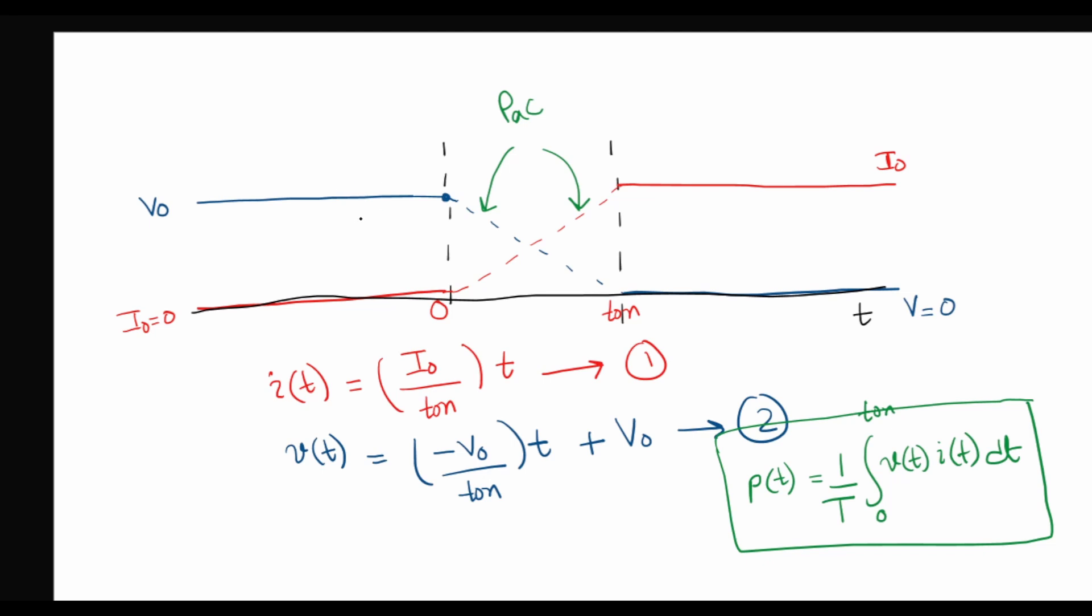We derived expressions for the instantaneous values of the current and voltage, and we saw that the AC power loss during this switching transition is given by this expression here. We have to find the area under the curve in this switching period. So this area under the curve is given by this expression here.